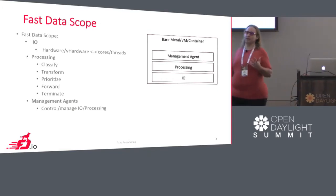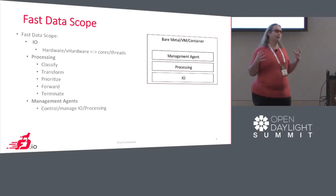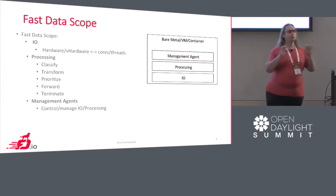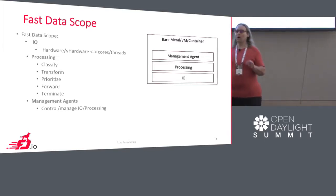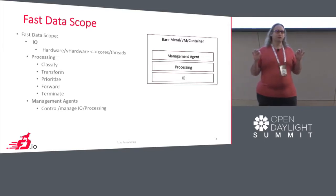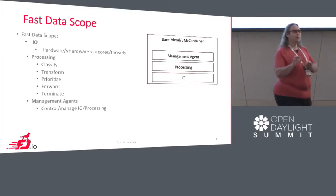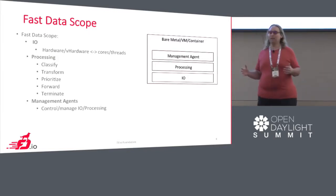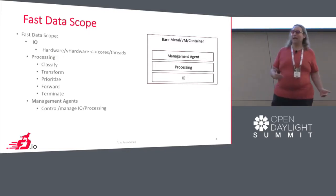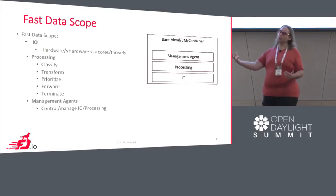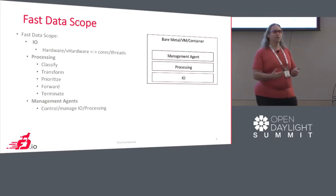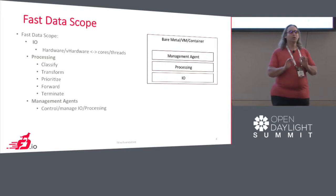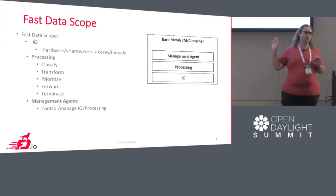Most of the time when we're talking about FD.io we'll end up talking about networking, because we're basically all networking people here. But one of the things we realized when we started bringing people together to form FD.io was that the future of I/O is converged. Networking and storage are not going to be things you can effectively handle performantly separately in the future. Among other things, you start stomping each other across cache if you have your I/O for storage separate from your I/O for networking, and you thrash the performance out of each other. So this has to converge.